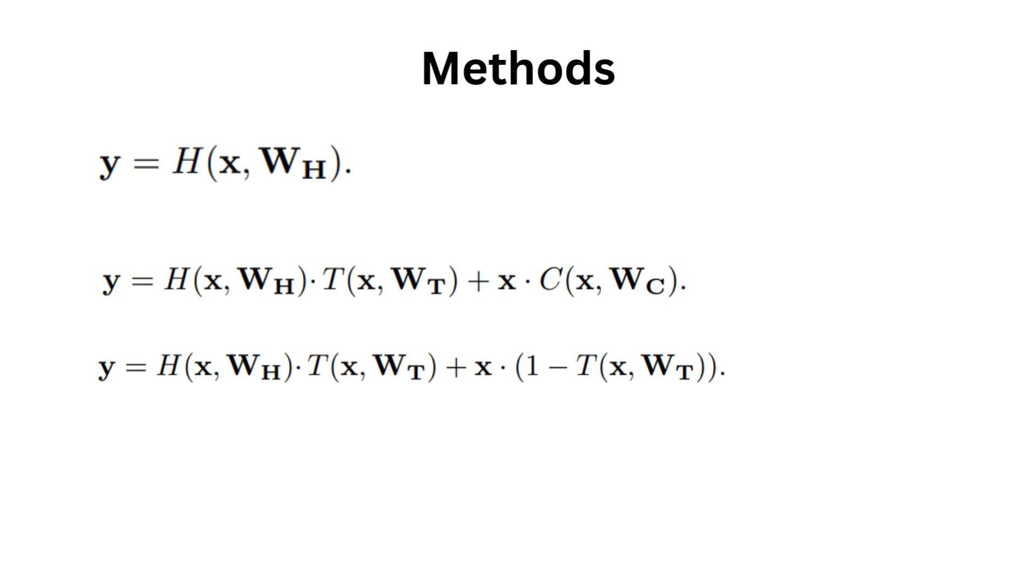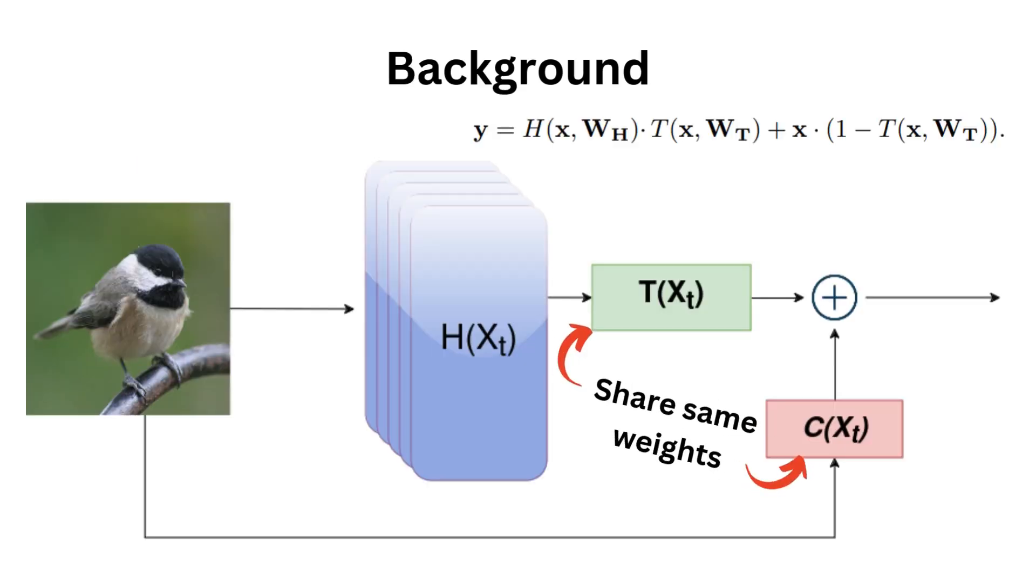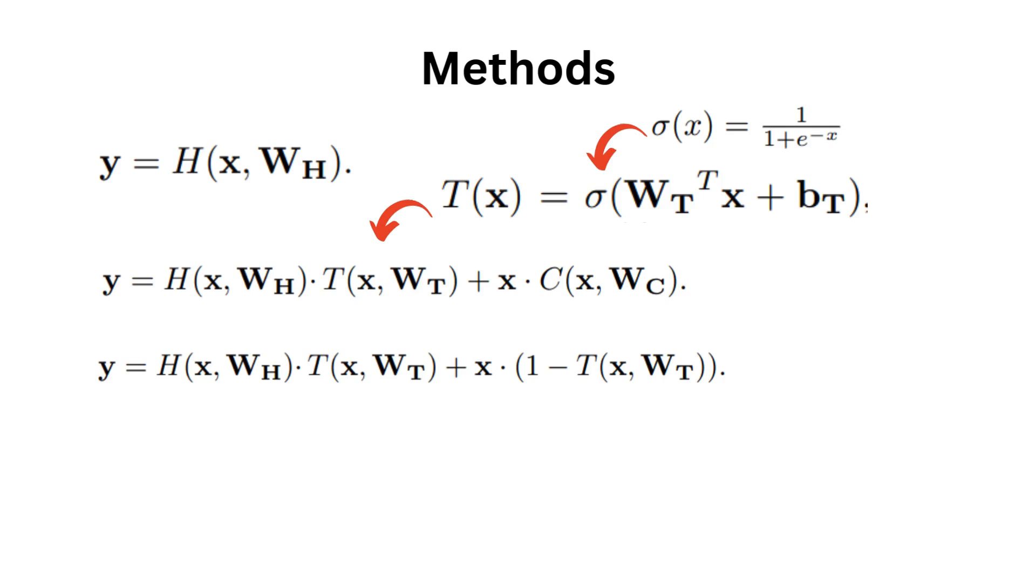They then define c, the carry, as being 1 minus the transform. Both the transform t and the carry c share the same weights since c is 1 minus t. Furthermore, they define t as being this formula, which will be bounded between 0 and 1 since the sigmoid.